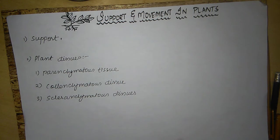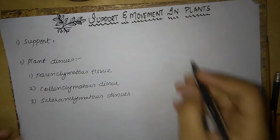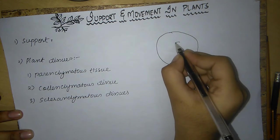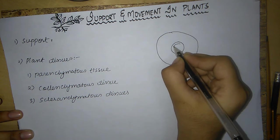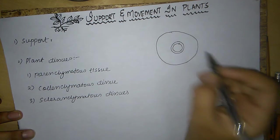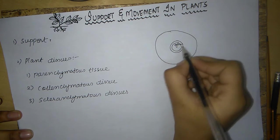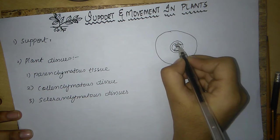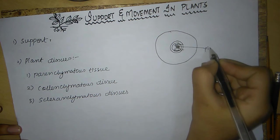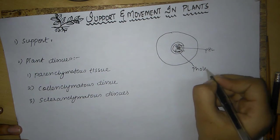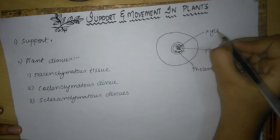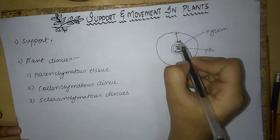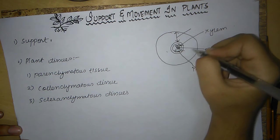Now I am going to show you the basic structure of the plant cell. This is a plant cell. This area is xylem and this area is phloem, and in between xylem and phloem there is pith. This is phloem. This is xylem. This area from epidermis to xylem — this whole area is called cortex.